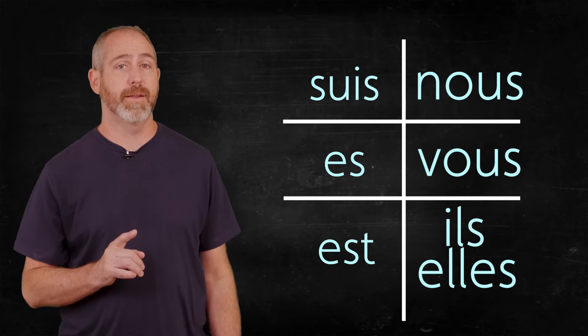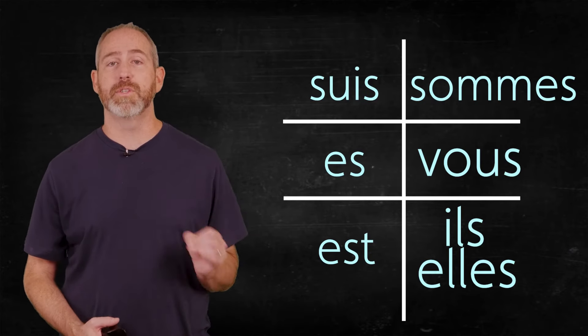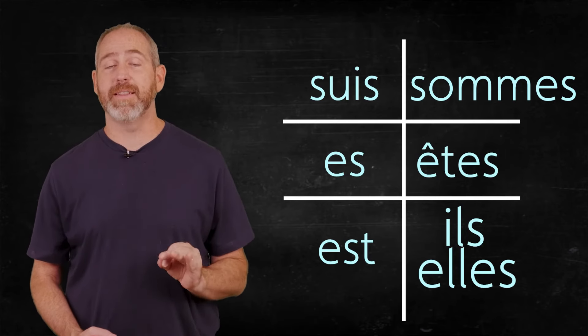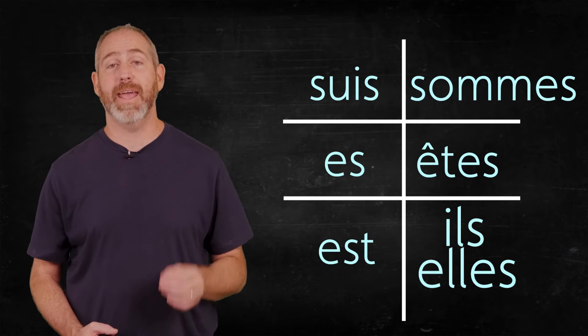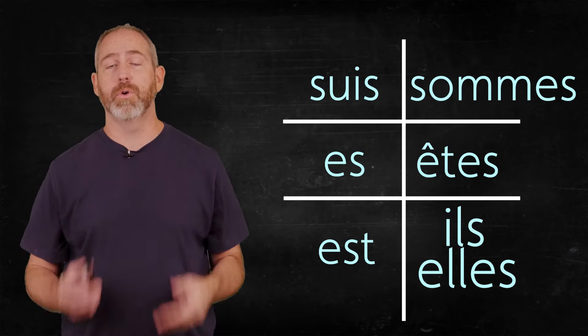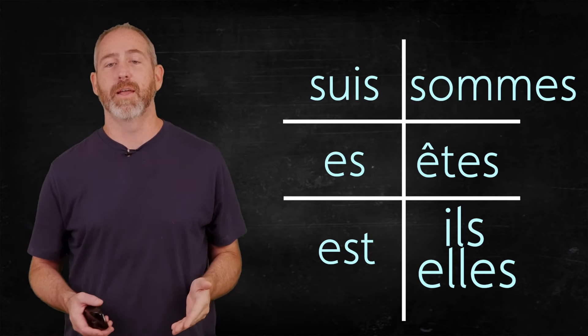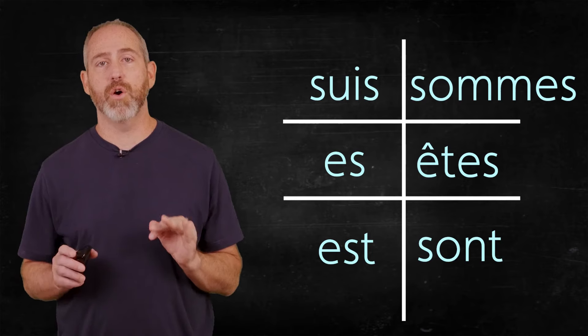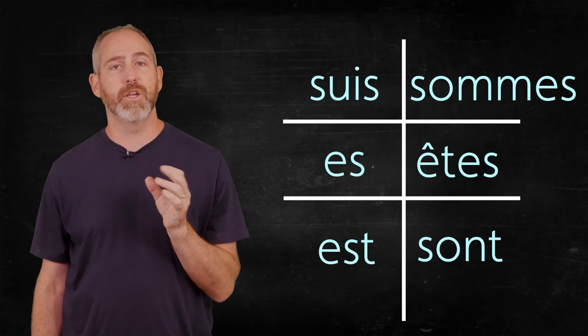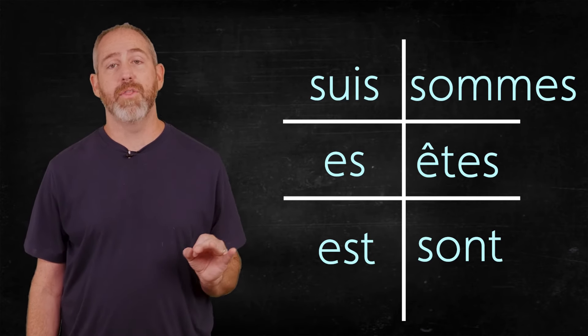Now let's go to the top right. The nous form is going to be sommes. So we are is nous sommes. Now down below that, the vous form is êtes. It's got that same accent as être, itself, to be. So vous êtes, that's you are, plural, talking to a group of people, or it's you are, vous êtes, talking to one person that I want to show respect to. And then at the bottom right, we're going to put the word sont, S-O-N-T, sont. So that goes with ils, the guy or mixed gender version of they, and elles, the just girls version of they. So ils sont, they are, and elles sont, they are.